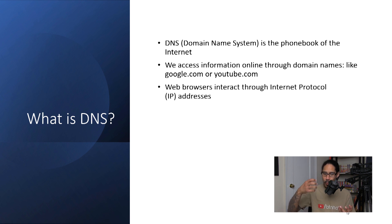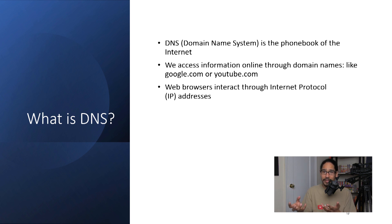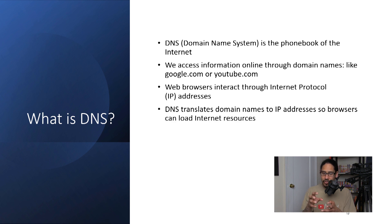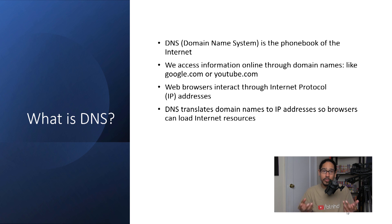But behind the scenes, whatever web browser you're actually using — like Google Chrome, Microsoft Edge, Internet Explorer (rest in peace), Firefox, Safari — those browsers actually interact through IP addresses. DNS translates domain names to IP addresses so the browser can load the internet resource you're trying to get into. When you type in Google.com, the browser behind the scenes translates it into an IP address, goes to whatever server it needs to, and then loads up Google.com for you.